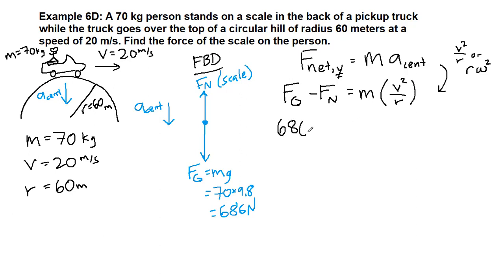So 686 minus the unknown normal force that we're solving for, because that's the scale. Now we can plug in the rest of our numbers, 70 on top, we have 20 squared over 60. We're going to add the normal force to both sides. So 686 equals 467 plus F_normal minus 467 on both sides.